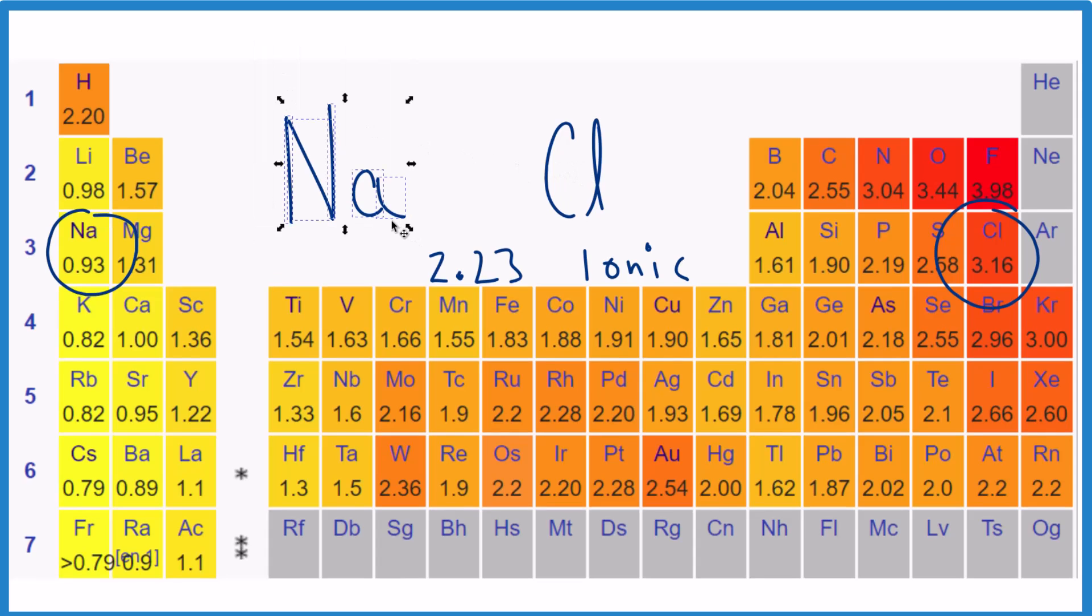The sodium here loses an electron, the chlorine gains it, and then they bond together with an ionic bond.